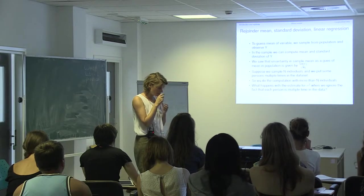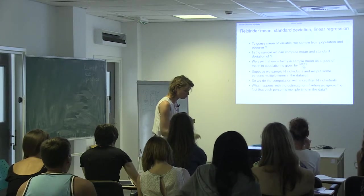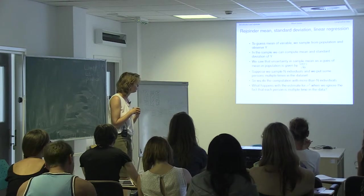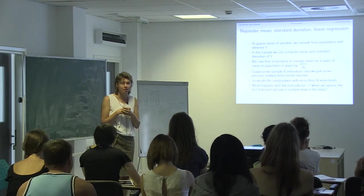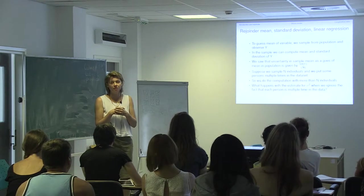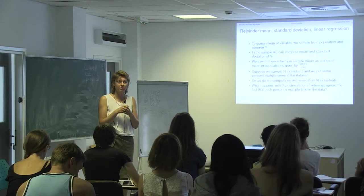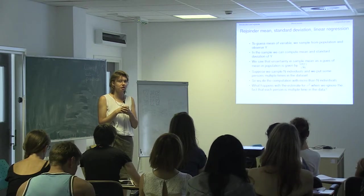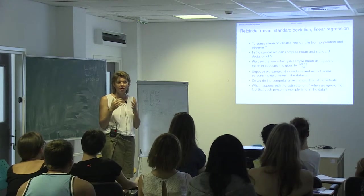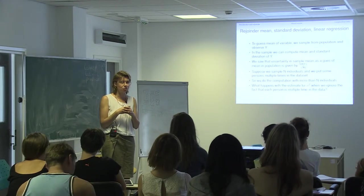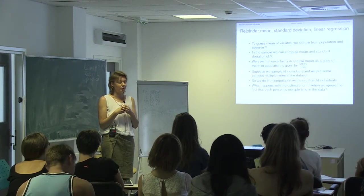We use the standard deviation of Y divided by the square root of the total number in the sample. That is the standard error of the mean. The mean plus two times the standard error and the mean minus two times the standard error — that is the confidence interval. That is the range of possible values for the true mean based on my dataset.